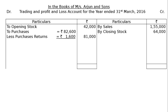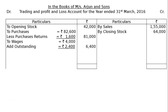Next is wages rupees 4,000, and add outstanding wages rupees 2,400 from adjustment number two. Outstanding wages will be written twice — once in the trading account and once in the liability side of the balance sheet under current liabilities. The final column shows rupees 6,400. Next is factory expenses, that is carriage inwards — the amount paid to bring goods inside the godown.